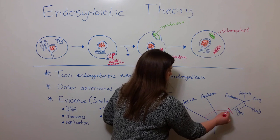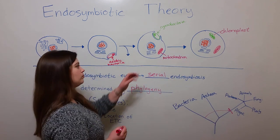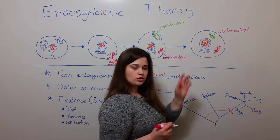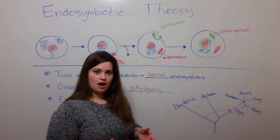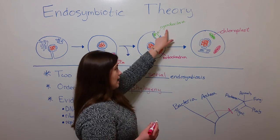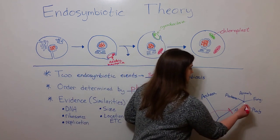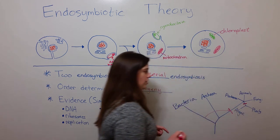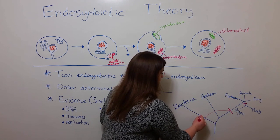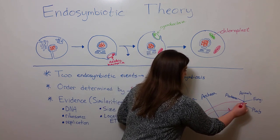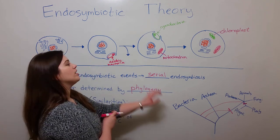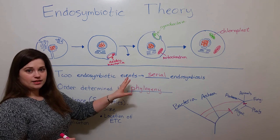Most eukaryotic cells do have mitochondria, suggesting that the aerobic bacterium was engulfed very early in the eukaryotic lineage. The cyanobacterium, however — its engulfment led to the chloroplast. Chloroplasts are only in a few different types of eukaryotic cells, mainly algae and plant cells, suggesting that the cyanobacterium was engulfed by an ancestor of plants and algae after it split off from the lineages that led to protozoa, animals, and fungi.